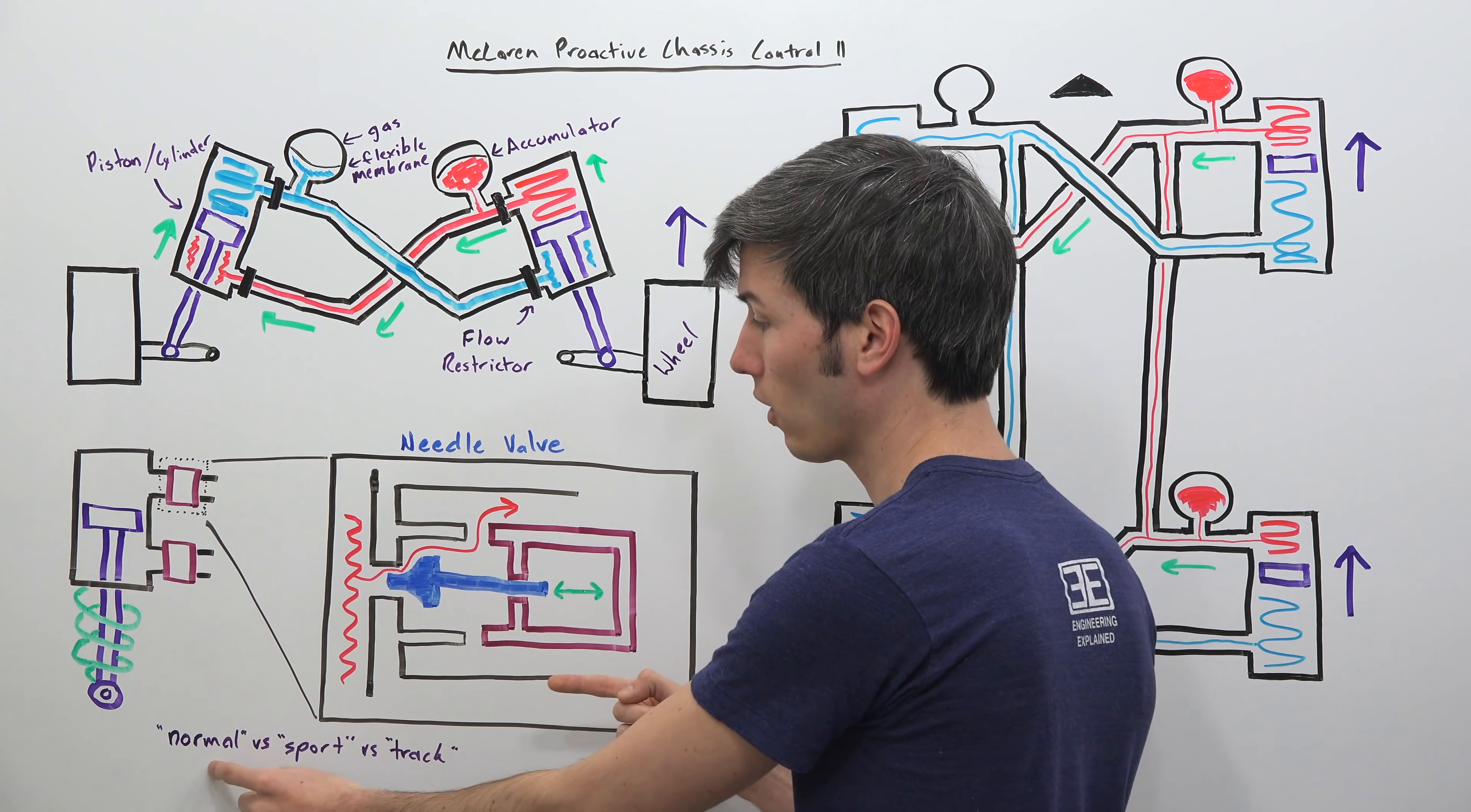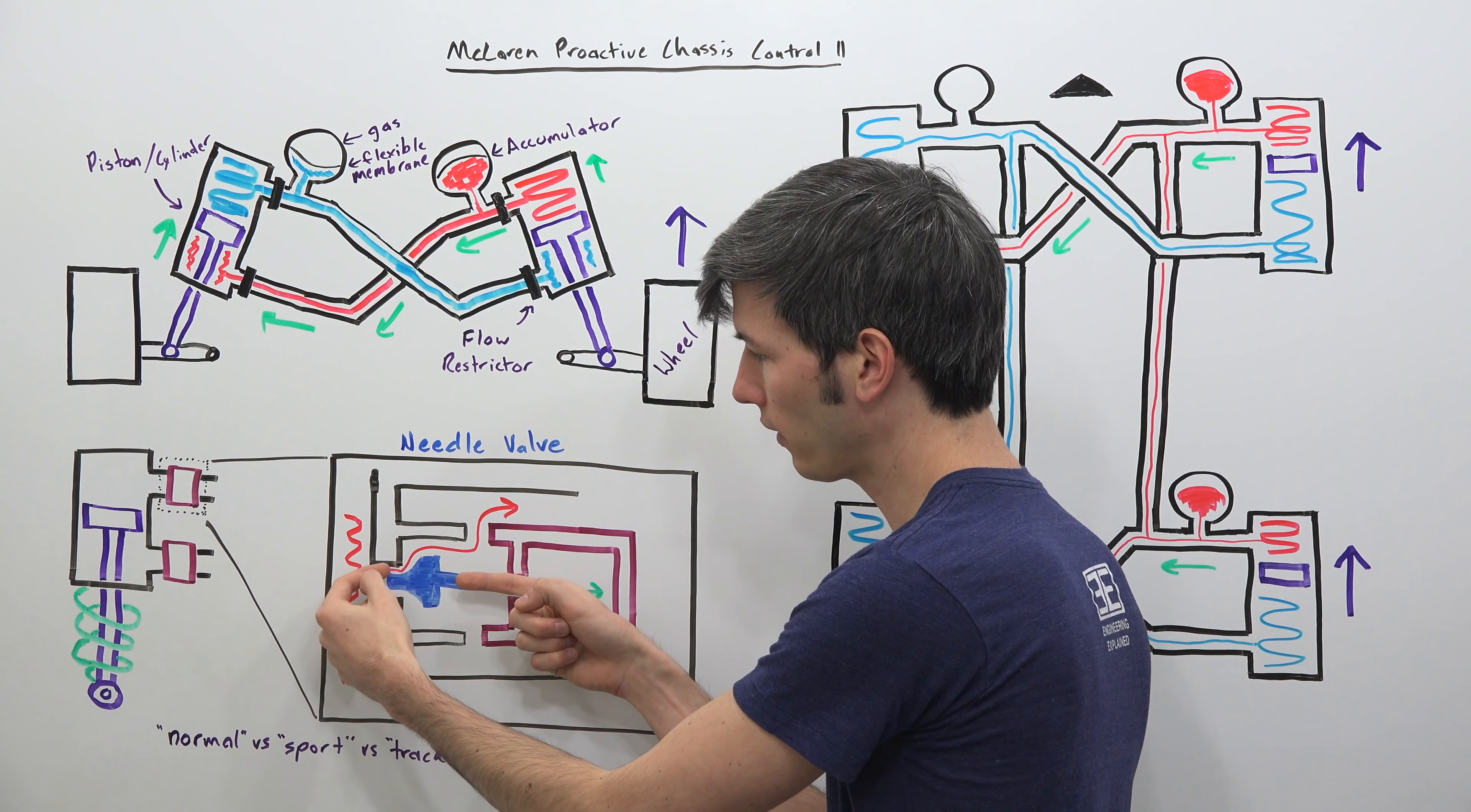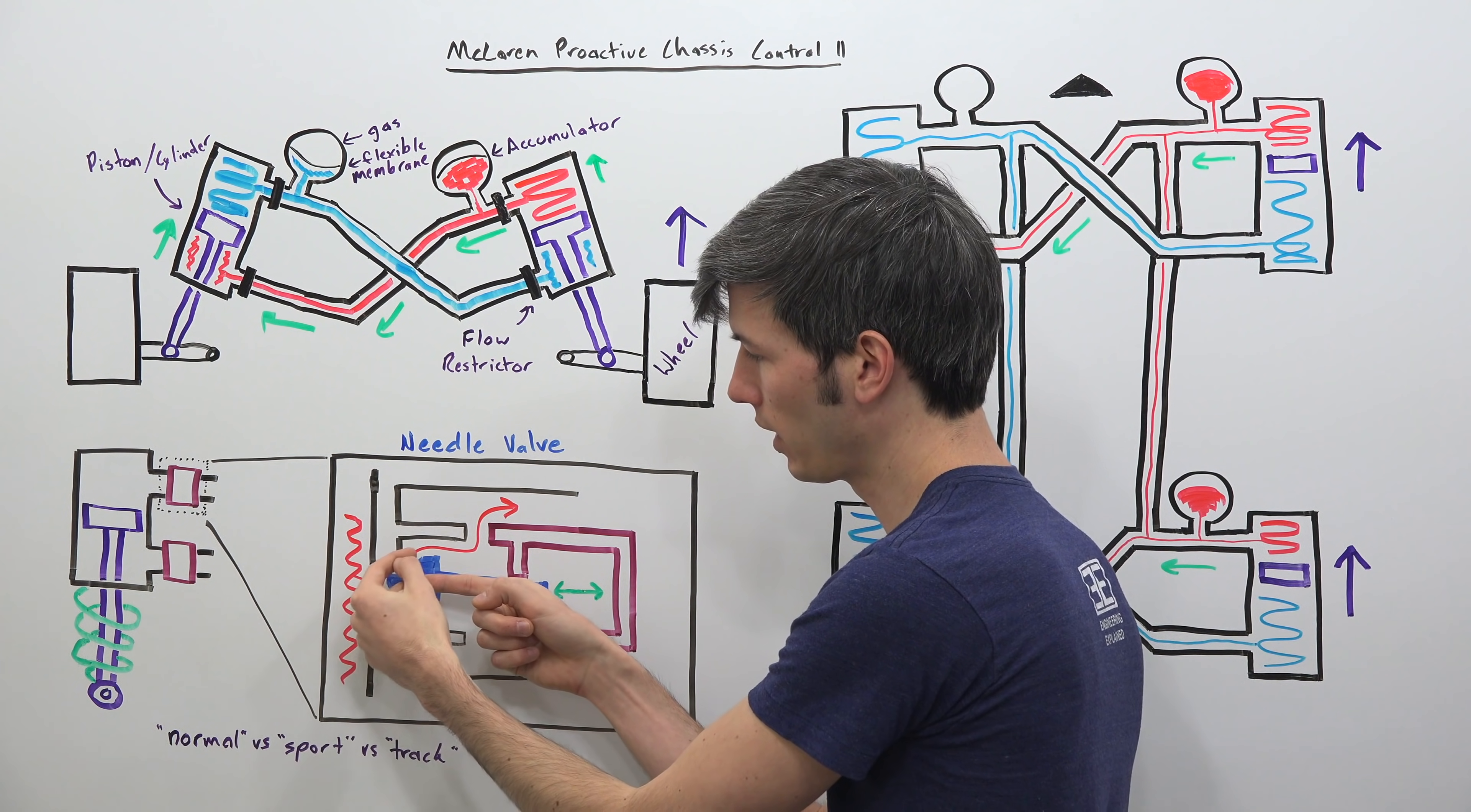Looking just at this needle valve you can see that you can pull this valve in or out. So you will control this depending on what mode you're in. Normal, sport or track will change where this needle valve is. So you can see that if the fluid wants to come out it has to pass through this needle valve to exit into this piping here.